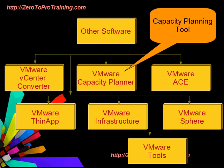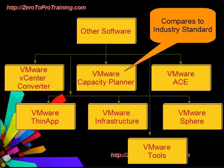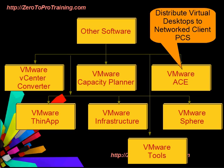VMware Capacity Planner is an information technology capacity planning tool. It collects utilization data in heterogeneous computing environments, then compares it to industry standard reference data to provide analysis and decision support modeling. VMware ACE provides a means of distributing secured virtual desktops to networked client PCs.